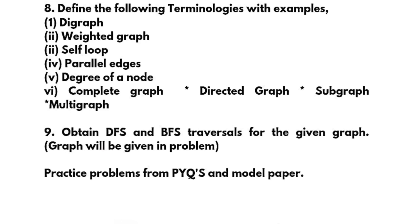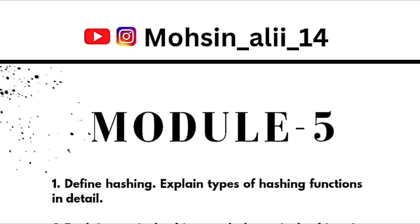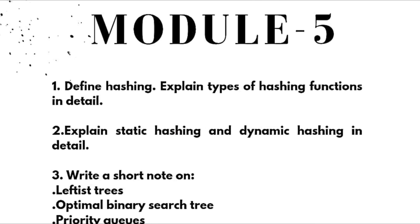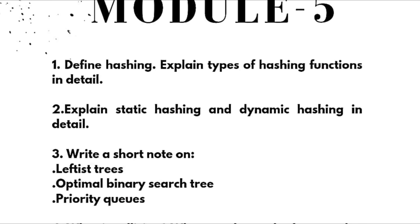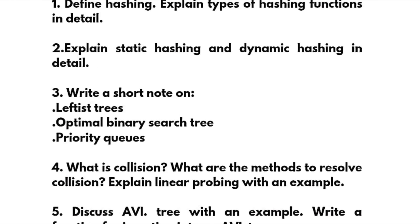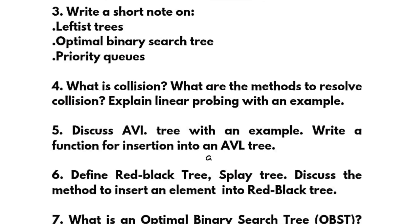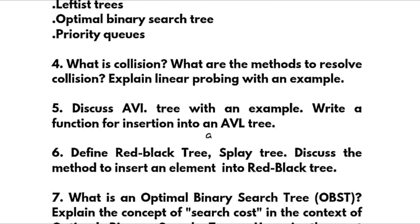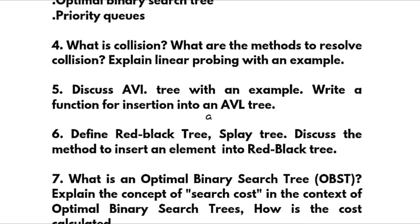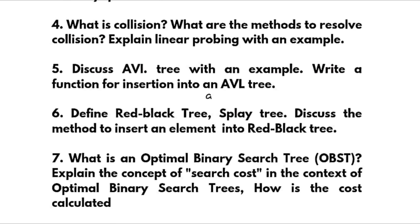Module 5 important questions: Define hashing and explain types of hashing functions in detail. Explain static hashing and dynamic hashing in detail. Write short notes on leftist trees, optimal binary search tree, and priority queues. What is collision? What are the methods to resolve a collision? Explain linear probing with an example. Discuss AVL tree with an example and write a function for insertion into an AVL tree.